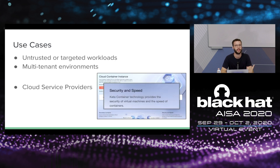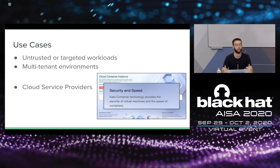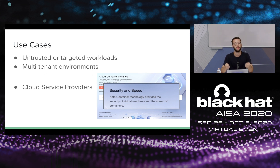The use case for this solution: Kata is great for untrusted or targeted containers where you're afraid the container might want to break out and affect the host. It's also really useful in multi-tenant environments where you want to segregate containers from several tenants. Cloud service providers are a prominent use case — they run containers from multiple customers on the same platforms, those containers might be malicious, and they need strong isolation between containers of different customers. Several cloud service providers are already using Kata in production to support customer multi-tenancy.